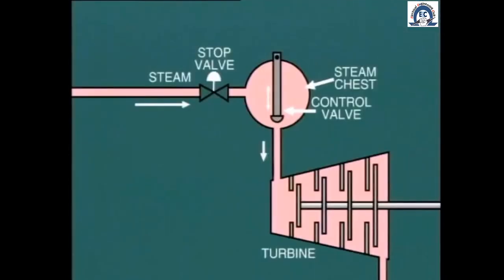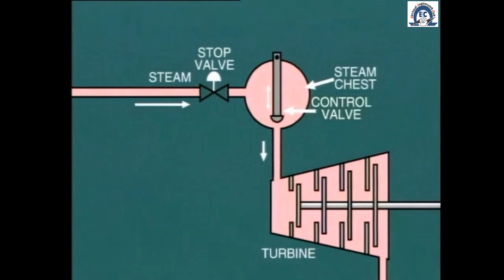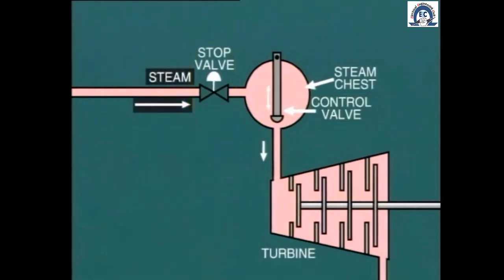In the most simple arrangement shown here, we have one control valve which, depending on its setting, allows more or less steam to flow into the turbine from the steam chest. When the turbine stop valve is open, the steam chest is charged with steam directly from the boiler.